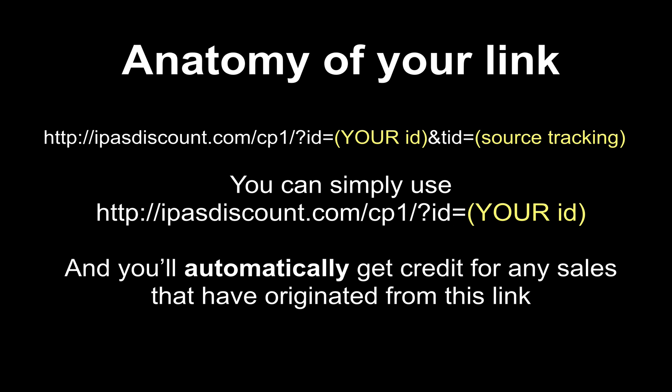The areas highlighted in yellow are the areas where your information would be different. For newer accounts, the affiliate ID is going to be a numerical value, and for older accounts, that affiliate ID will just be letters — it could be a name or anything of the sort. I wanted to clarify that because it's a question I'm getting very frequently.